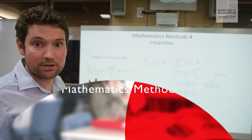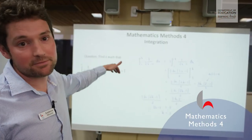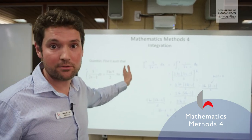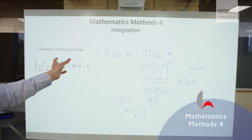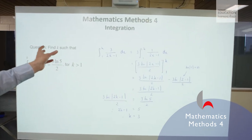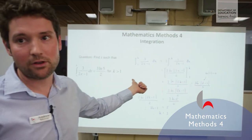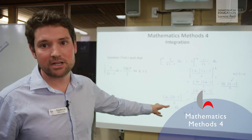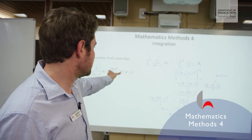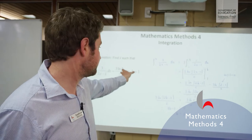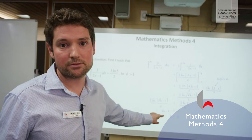So we've got an integration problem for Maths Methods 4 here. You can see that there are limits. This is what we call a definite integral, this type of problem. And what we're doing is we're solving for an unknown value. The unknown value in this case is k. So you can see the setting out. It also involves logarithms, absolute values and eventually we get to a solution. There were actually two solutions here but because we're restricted to positive or values of k greater than positive 1, there is only one solution in the end.